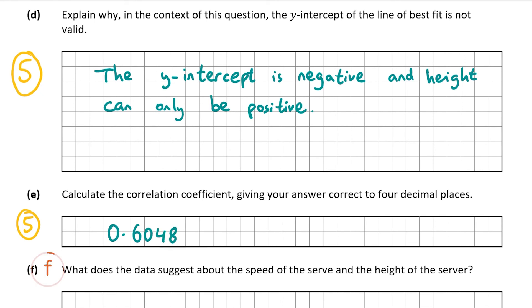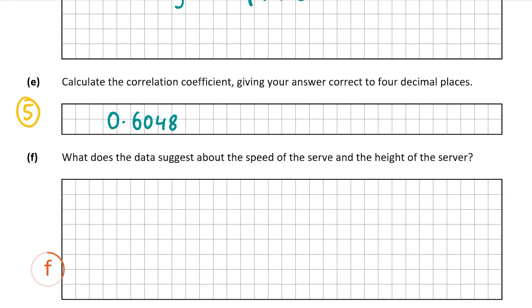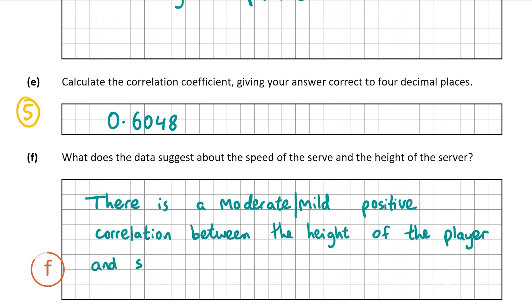So now let's have a look at part F and this asks us what the data suggests about the speed of the serve and the height of the server. So 0.6048 is around the middle. We can see that there's a moderate/mild positive, as it's plus 0.6048, so there's a moderate/mild positive correlation between the height of the player and serving speed. So that's our answer for part F.